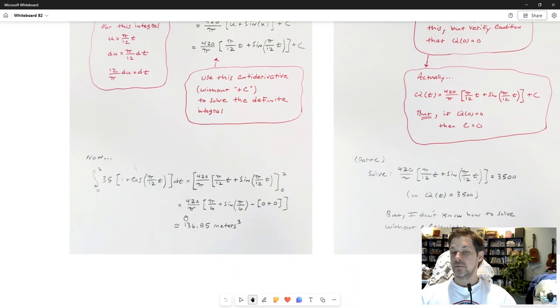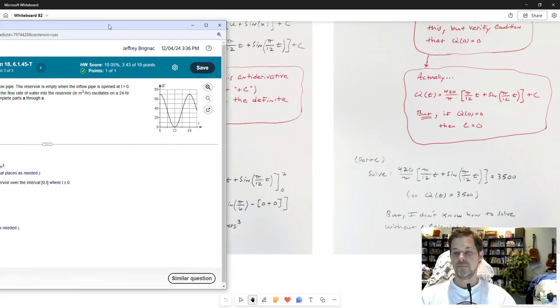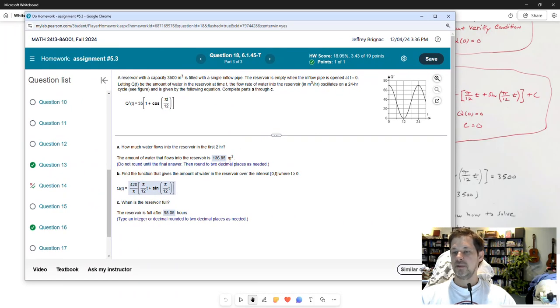Back to what we were doing. Here's the integral that I needed to evaluate. Here's the antiderivative I just found. I put 2 in first, I get this. I subtract. I put 0 in second. I get 0 and 0 for each term. That turns out to be 136.85 cubic meters. I calculated that directly by calculator, and it said to round to two decimal places. So that's part A.